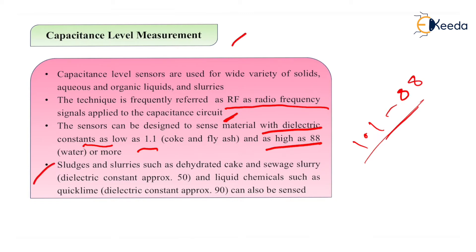Slurries such as dehydrated cake and sewage slurry must have a dielectric constant of approximately 50. Liquid chemicals such as quick lime with a dielectric constant of 90 can also be sensed through capacitance level measurement.